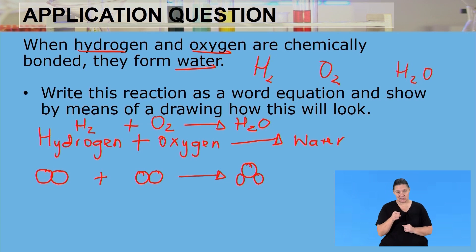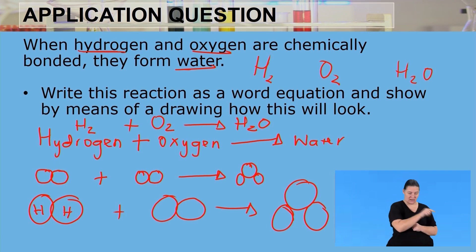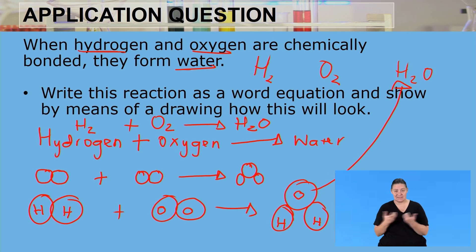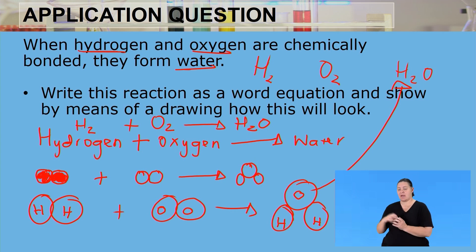In the drawing, we use circles to represent the atoms. We have our two hydrogen atoms and our two oxygen atoms as reactants. The product, H2O, shows one oxygen atom chemically bonded to two hydrogen atoms. We color them differently to distinguish hydrogen from oxygen. So the product formed is water, H2O.